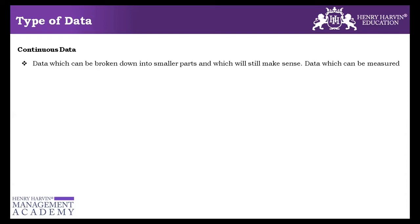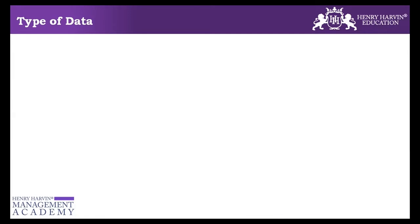There are two types of data generally that we talk about. One is continuous data, and another is discrete data. So these are two terms, continuous data and discrete data that we have in Six Sigma. So we will talk about it.